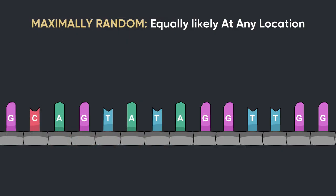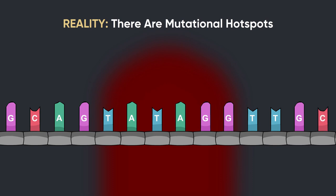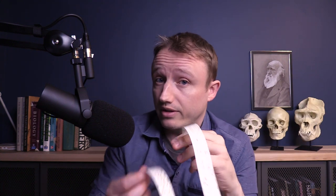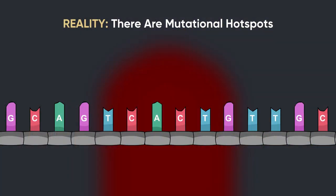The third thing we would expect to be true if mutations were maximally random is that mutations are equally likely anywhere in an organism's genome. But this is not the case. There are mutational hotspots and mutational cold spots. Again, this just has to do with the fact that DNA is a physical thing living in a physical environment — the cell is a physical, chaotic environment. Certain stretches of DNA are going to be safer than other stretches just because of the way they're packaged inside the cell.